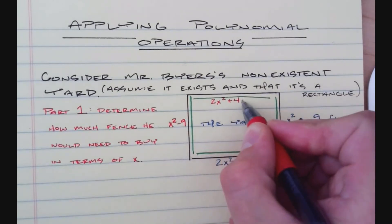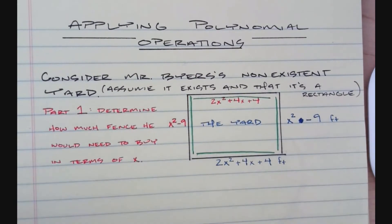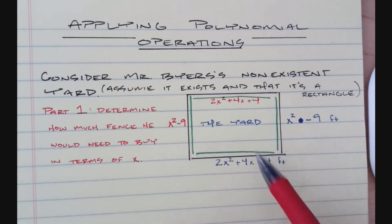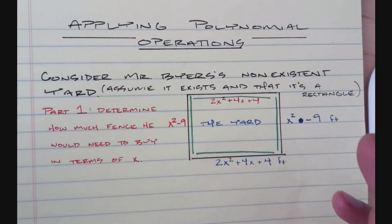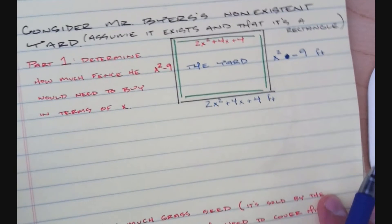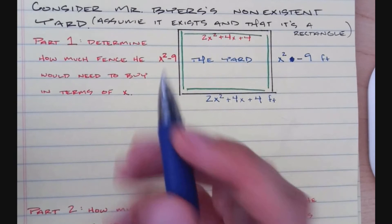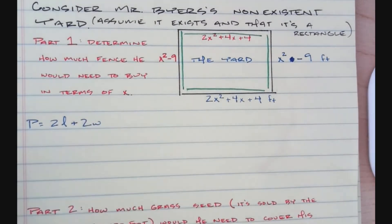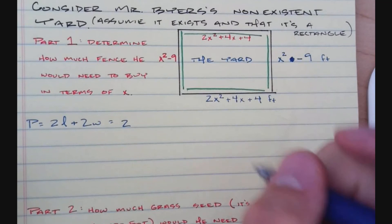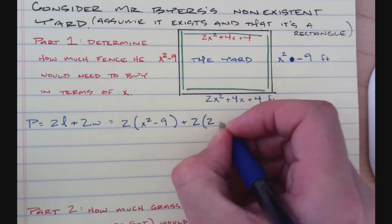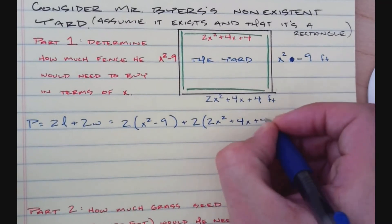There are a couple of ways we could do this problem. We can just add all the pieces together, or we can take the two distinct sides and multiply each by two, then add them together. I'm going to go with the second option: two of my lengths plus two of my widths, and that's going to be my perimeter P. So two of my lengths — I'll call that x squared minus 9 — and two of my widths — I'll call that 2x squared plus 4x plus 4.